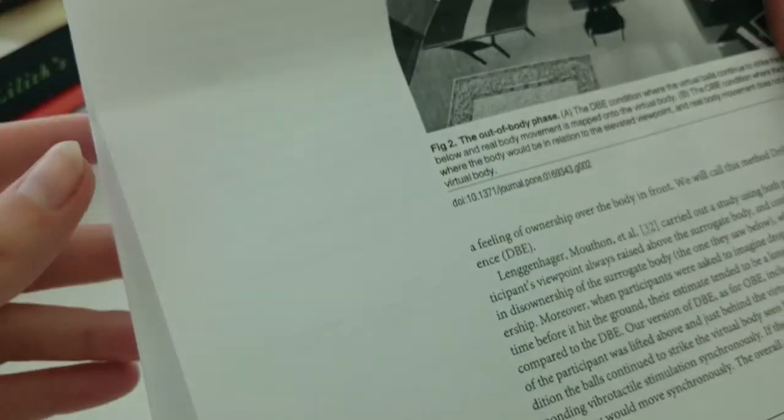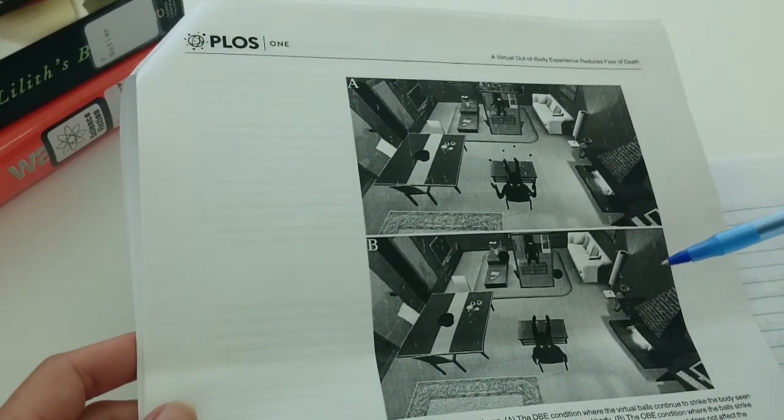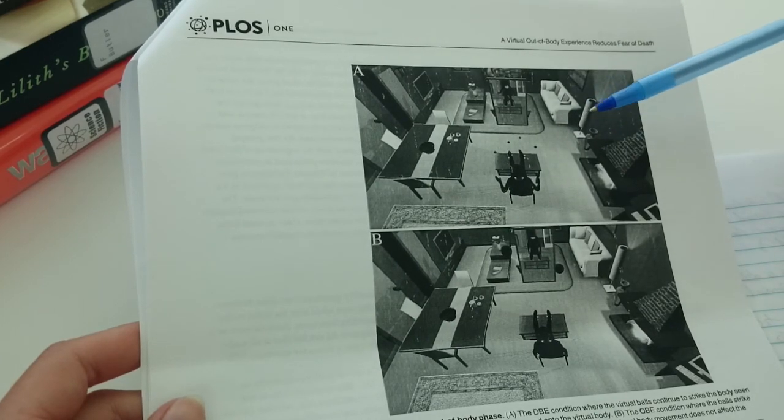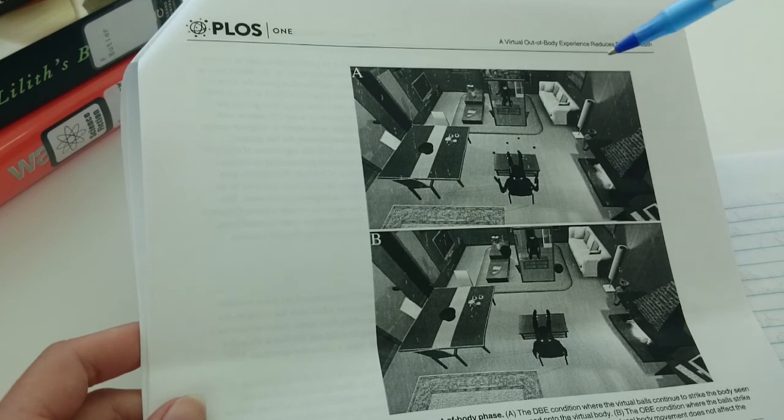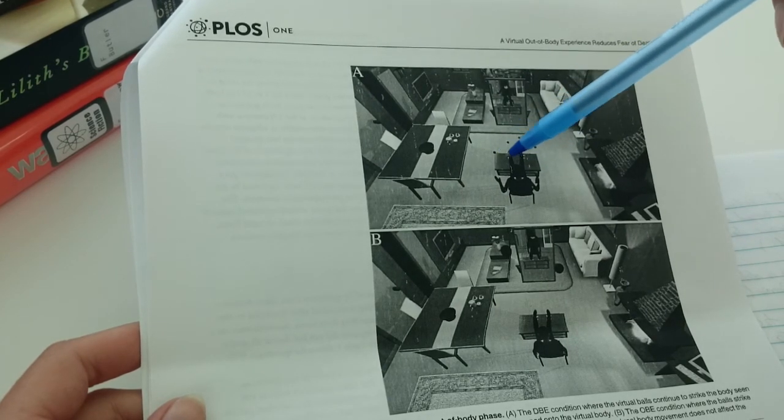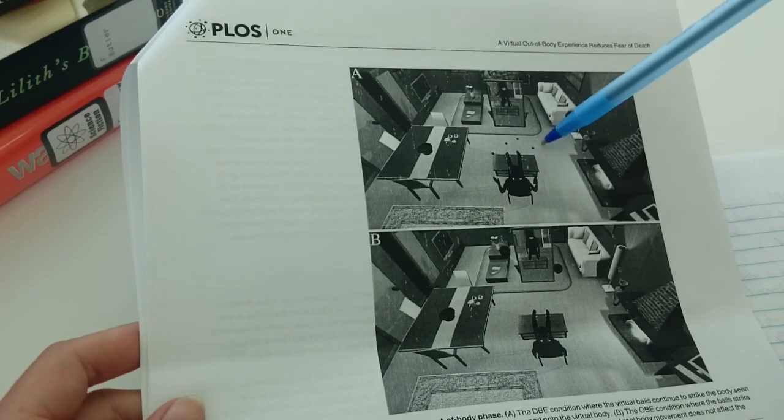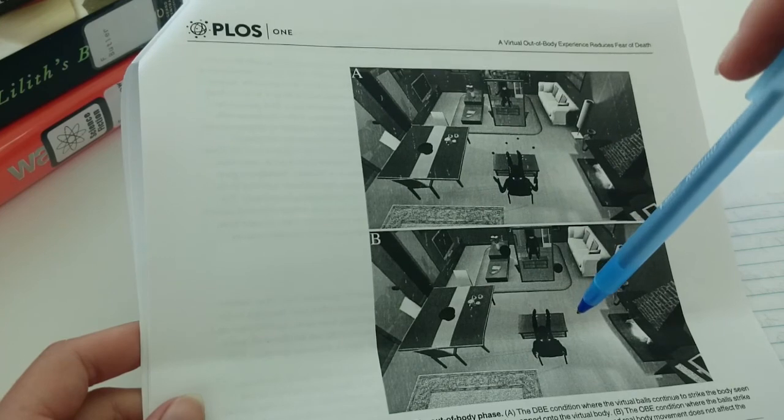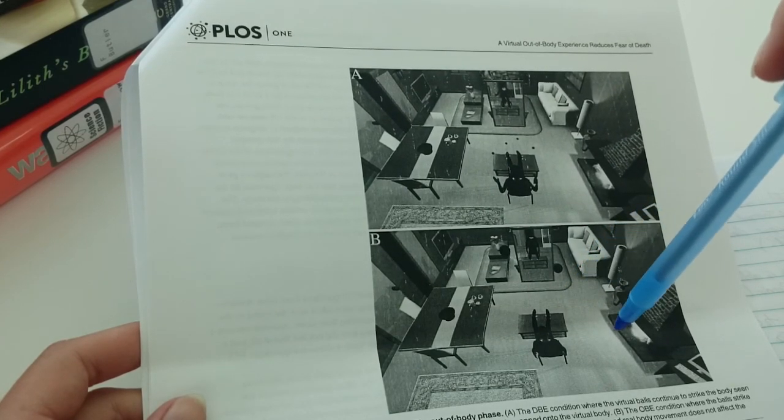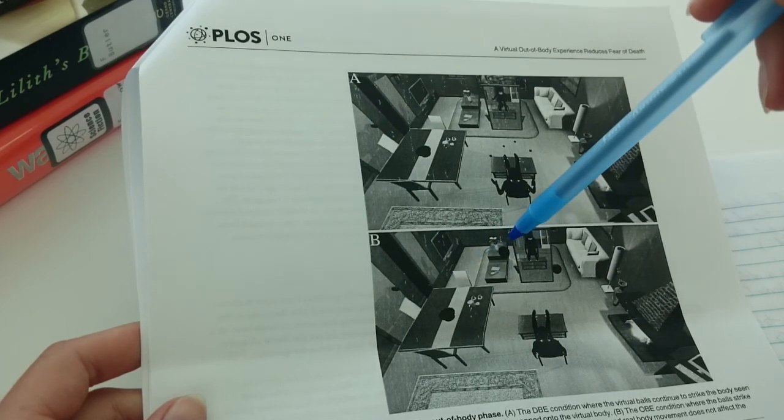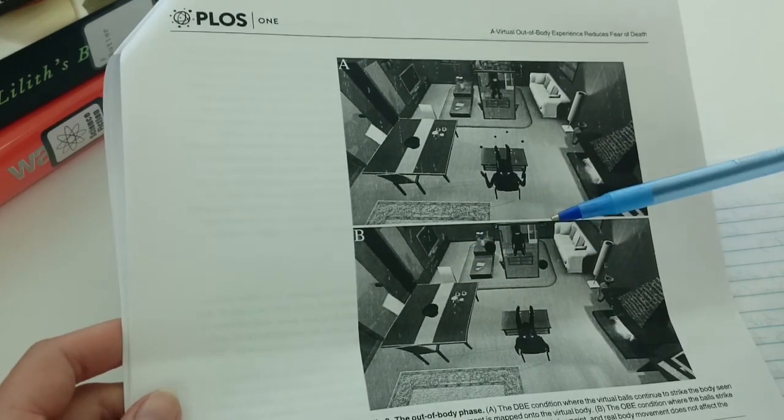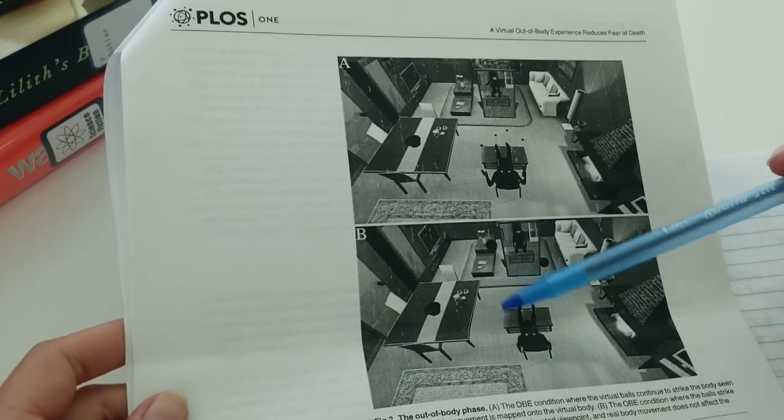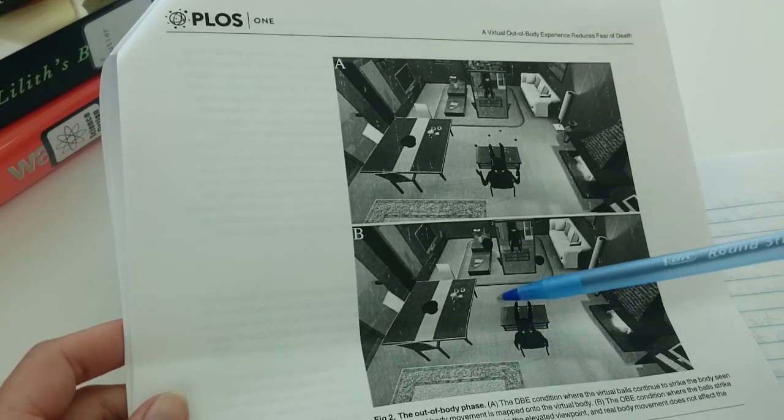So here's the two out-of-body experience phases. This first one was their control condition where the camera or the visual perspective has moved up and above virtual body, but when the virtual objects continue to strike the body, they still feel it in their physical body. And then this was the other out-of-body condition where the balls are up here. It's hard to see. This is a two-dimensional picture, but the balls are up near the ceiling with the person's viewpoint and striking them there. So it's separating them from the perception, from the ownership of this virtual body entirely.